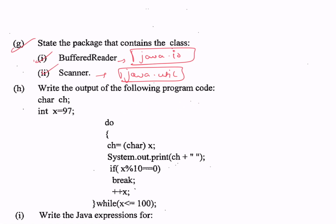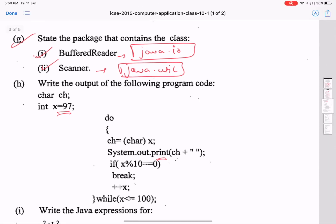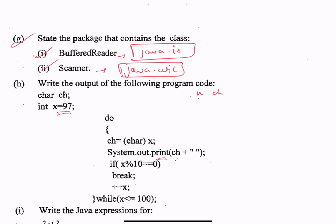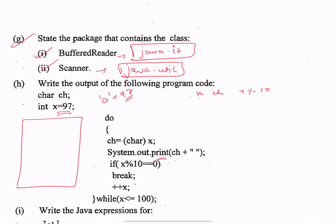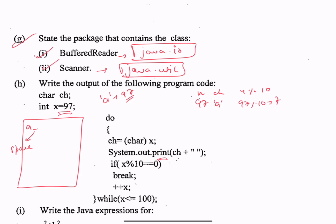Part h: write the output of the following code. char ch; int x equals 97. In the do-while loop: ch equals (char)x, then System.out.print(ch + " ") — it's a print not println. If x % 10 equals 0 break; then x++, while x <= 100. x starts with 97; as we know the ASCII value of small 'a' is 97, so ch is 'a' and 'a' is printed with a space.